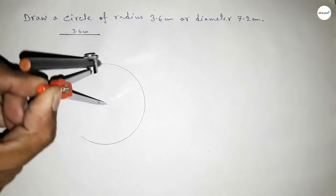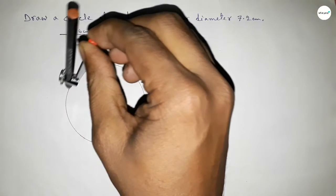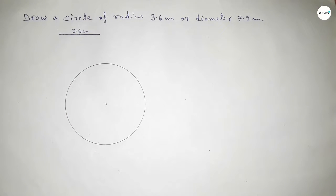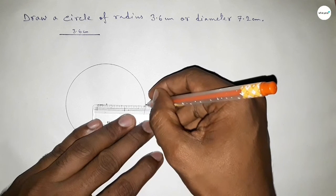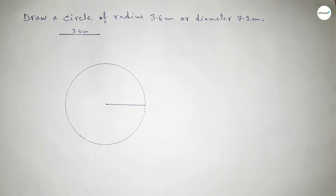By this way, which represents a circle with radius 3.6 centimeter. Now joining this one, okay. So taking here the center O and here A.